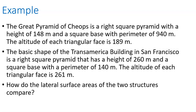This next example is an interesting comparison. I've got a pyramid and the Transamerica building in San Francisco. The Great Pyramid has a height of 148, a square base with a perimeter of 940, and the altitude of each triangular face — the slant height — is 189. Similar information is given for the Transamerica building.